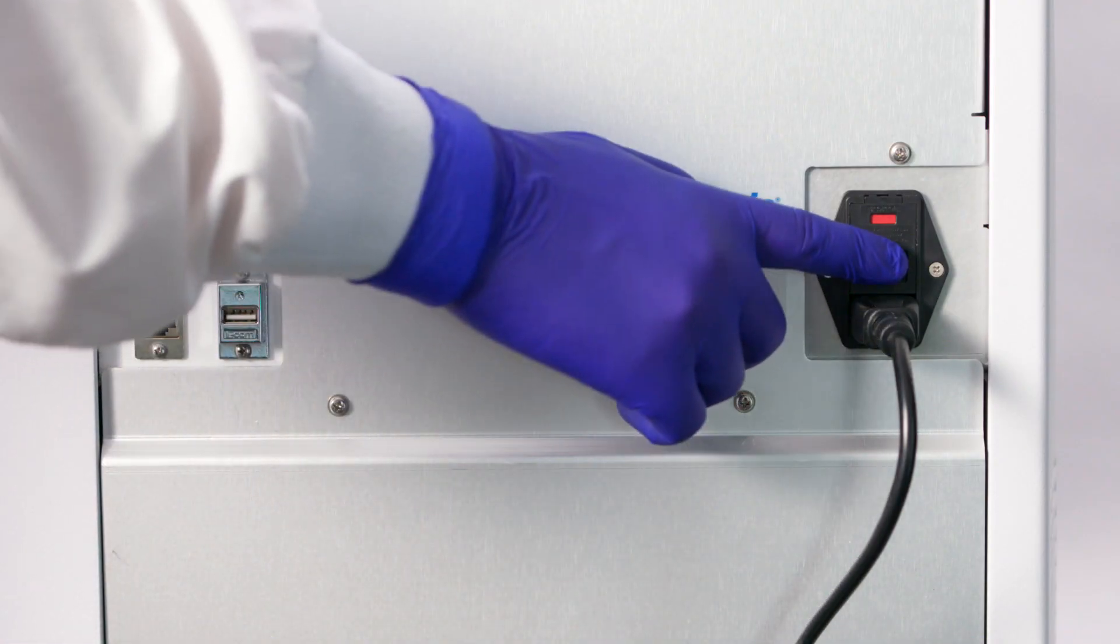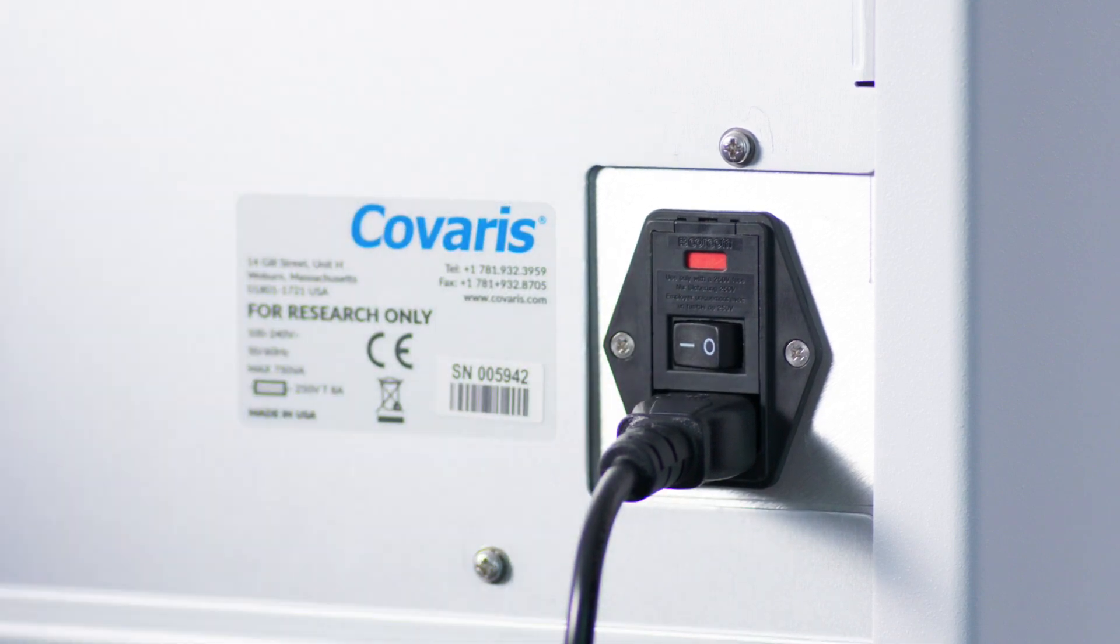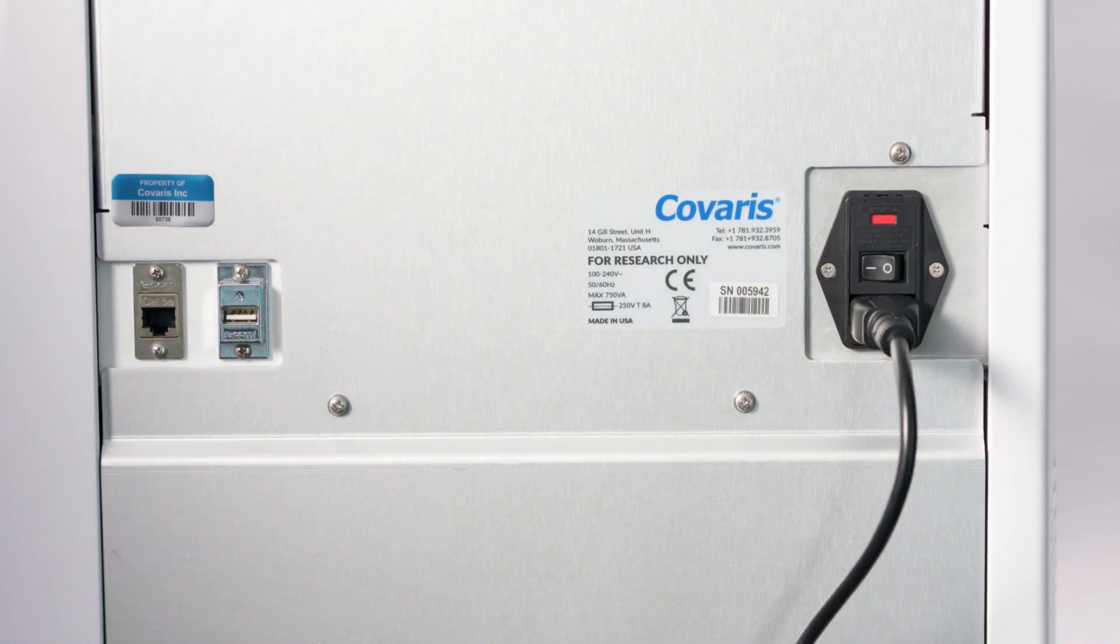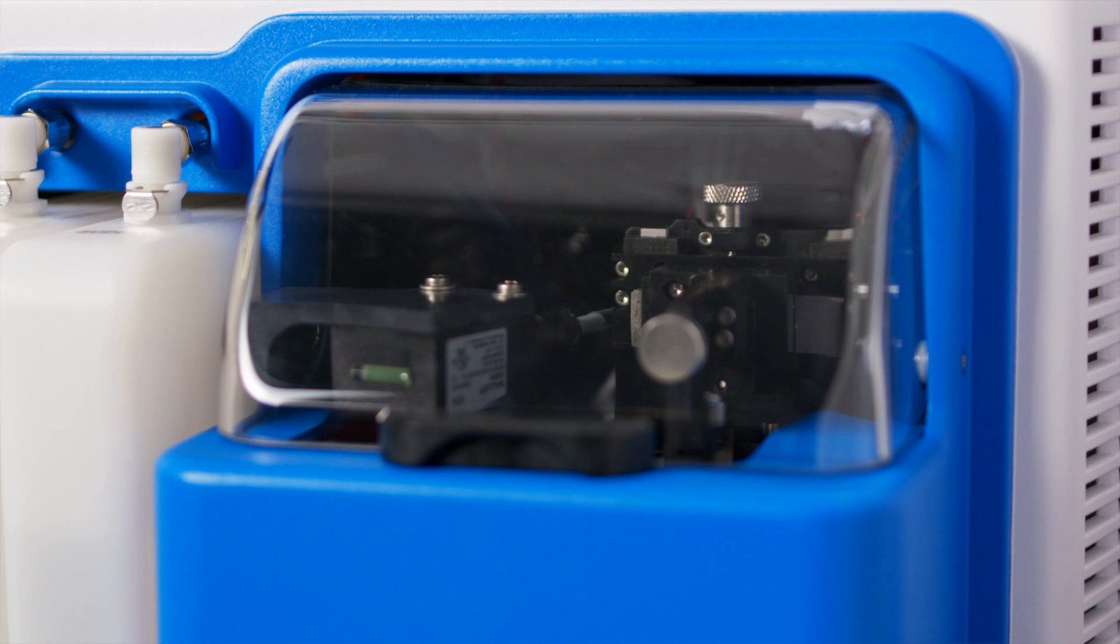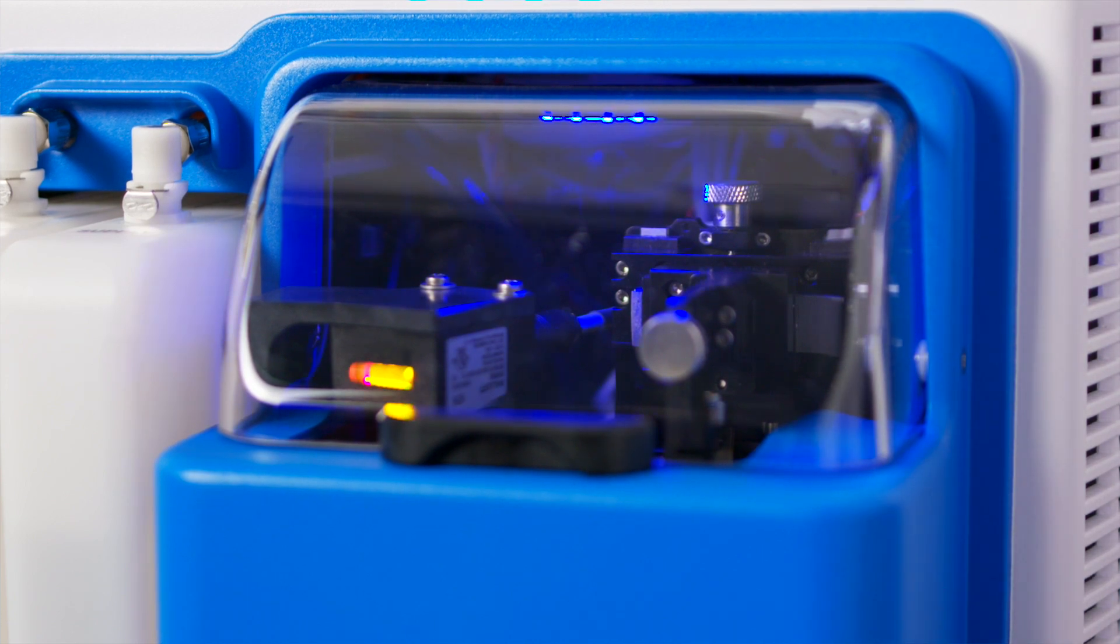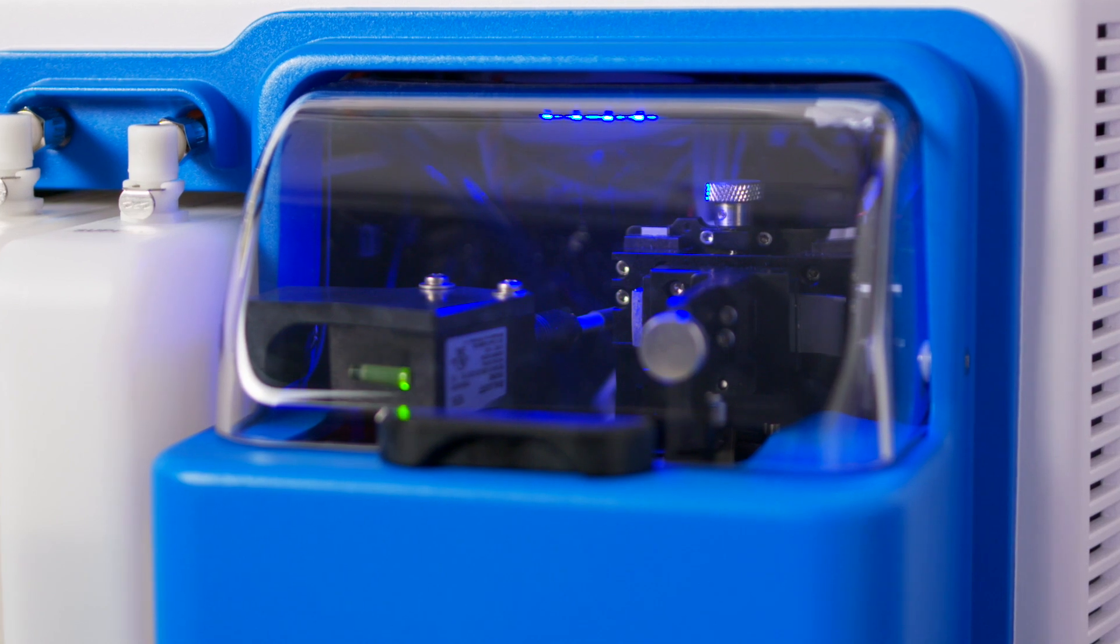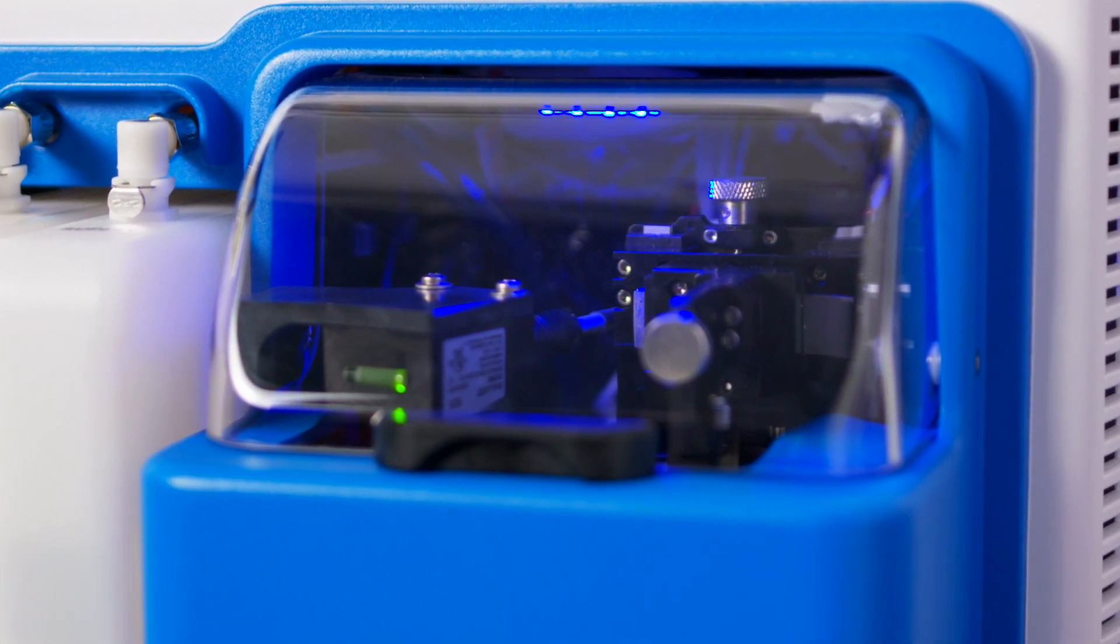Turn on the ML230 using the power switch located about halfway up the left side of the rear panel. The instrument light is located above the acoustic assembly and is inside of the safety cover. By default, the light will be lit once the instrument is turned on.